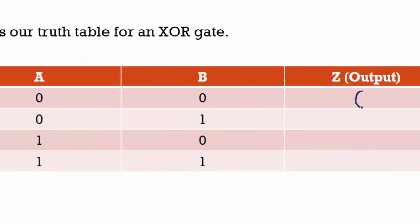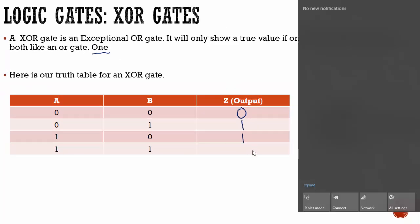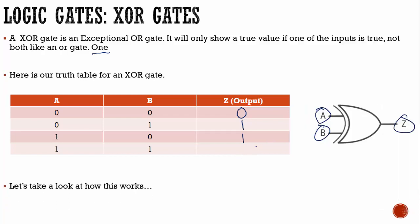Here's our truth table for an XOR gate. When neither one of them is true, that results in zero. When only one is in a true state — in this case B — that will result in a one. Vice versa: when A is on and B is off, that will result in a one. When both of them are true, with an exclusive OR gate only one can be true — so that results in a zero.